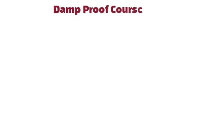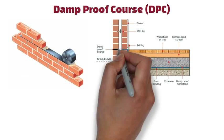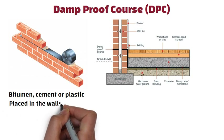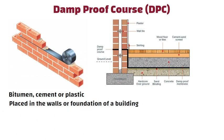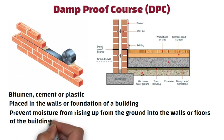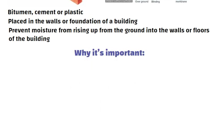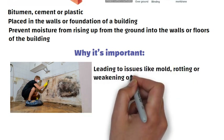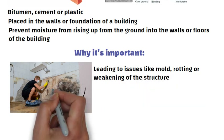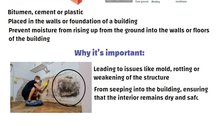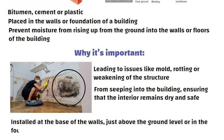Damp Proof Course (DPC): A DPC is a horizontal layer of waterproofing material, such as bitumen, cement, or plastic, that is placed in the walls or foundations of a building. Its purpose is to prevent moisture from rising up from the ground into the walls or floors of the building. Moisture can cause damage, leading to issues like mold, rotting, or weakening of the structure. The DPC helps stop this moisture from seeping in, ensuring the interior remains dry and safe. It is usually installed at the base of the walls just above ground level or in the foundation.